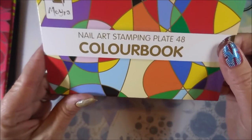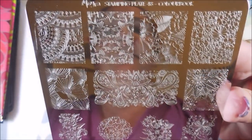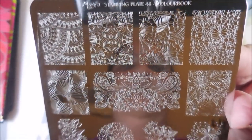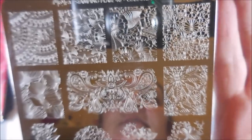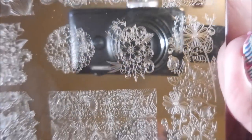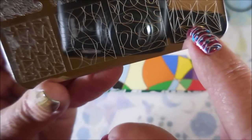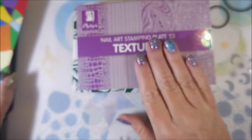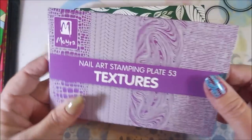Nail stamping plate 48 color book. This one would be good for some reverse stamping. Look at that. On things like this I would just fill in some of them. I wouldn't fill in all of them so that some of the base color could still show through. Look at these images. I love those. And y'all, this is just the stamping plates she sent me. I'm going to have to do a whole other video on the polishes.